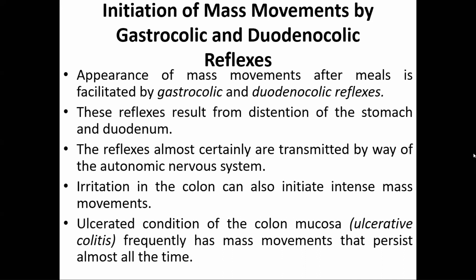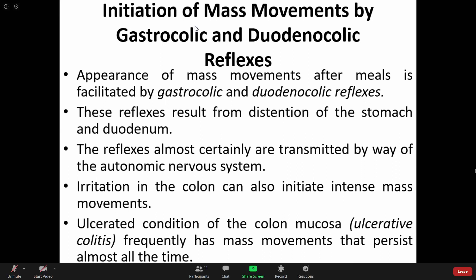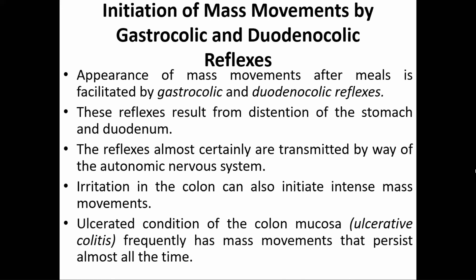In summary, today we studied the types of contraction and motility in the small and large intestine. The small intestine has three types of motility: segmentation contraction, peristaltic contraction, and migrating motor complex. The large intestine has two types: haustra and mass peristalsis. In the next class, we will talk about defecation, vomiting, GI hormones, and we will finish the gastrointestinal system.